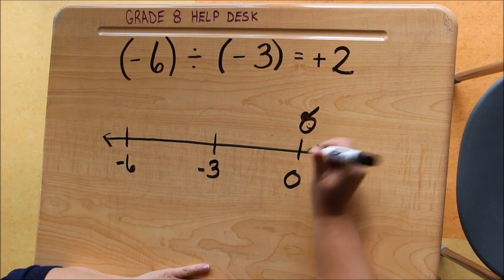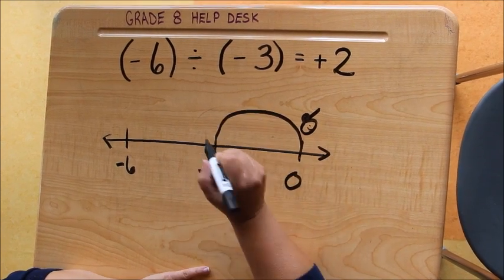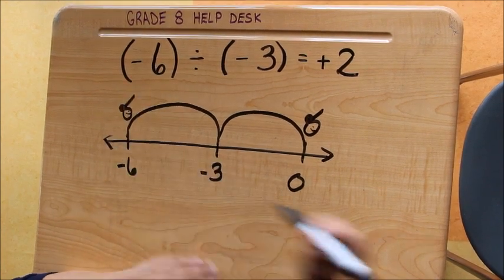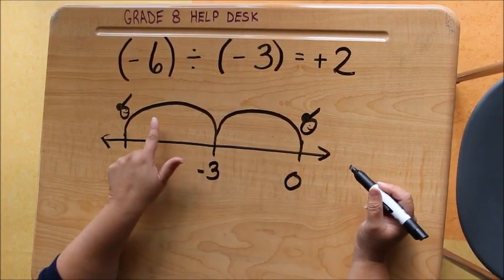So here we are. I'm going to jump backwards once, and I'm going to jump backwards again. So I've jumped once and twice.